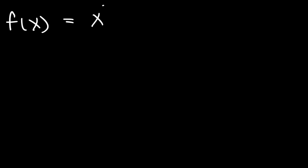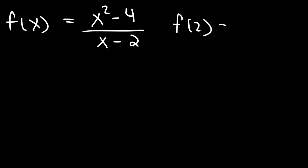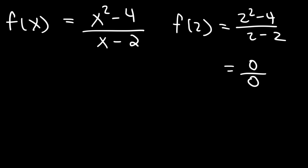Now let's begin our discussion with limits. Let's say that f(x) is x squared minus 4 over x minus 2. What is f(2)? Can we evaluate the function at x equals 2? If we plug in 2: 2 squared is 4, 4 minus 4 is 0, and 0 over 0 — we can't figure that out, so that's indeterminate. Therefore, we can't evaluate the function at x equals 2, and so this is when limits become important.